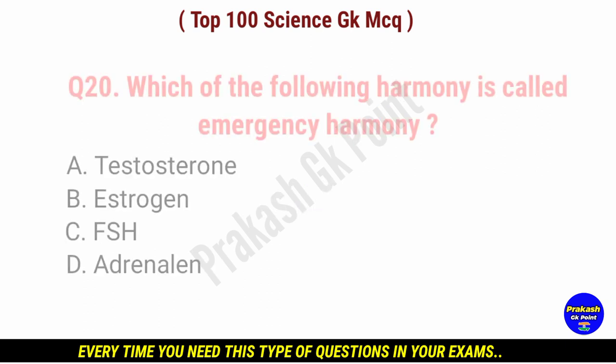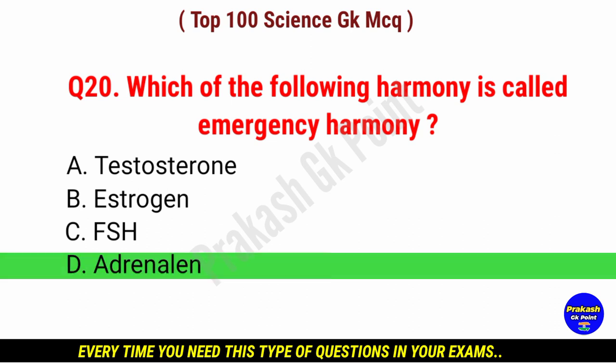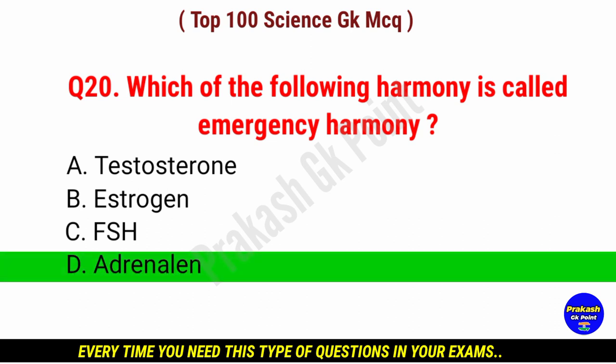Which of the following hormone is called emergency hormone? Answer: option D, adrenaline.